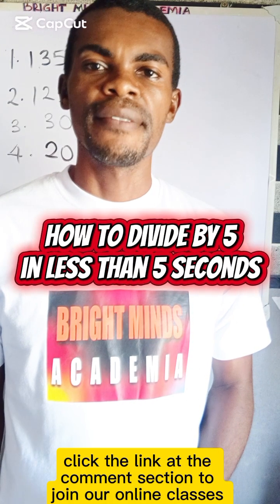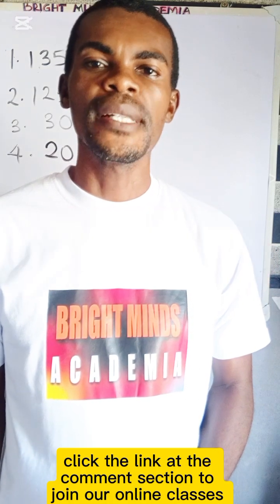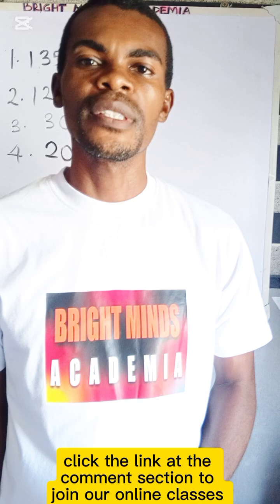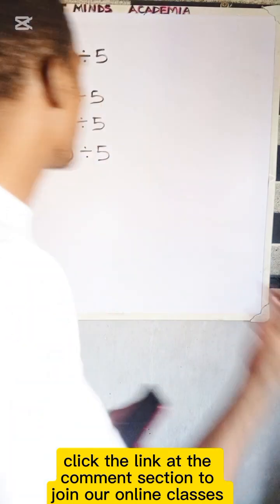To divide a number by 5, add the number to itself and move the decimal point to the left once. Now let's solve this.